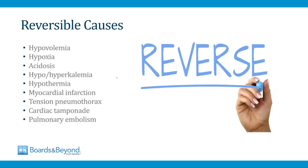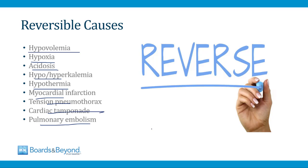Shown on this slide are the reversible causes of cardiac arrest. Patients who have severe hypovolemia or hypoxia can have a cardiac arrest. Acidosis and potassium abnormalities can cause cardiac arrest. Severe hypothermia can also cause cardiac arrest. A number of pathologic conditions are sometimes associated with cardiac arrest, including myocardial infarction, tension pneumothorax, cardiac tamponade, and pulmonary embolism. When running a code and following the ACLS algorithm, you want to think about which underlying reversible cause may have led to the patient's cardiac arrest.